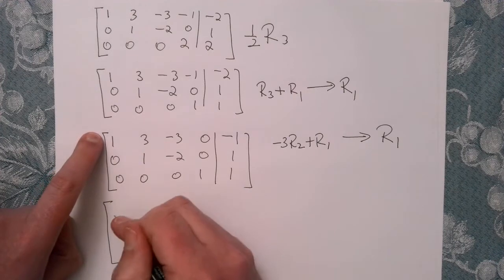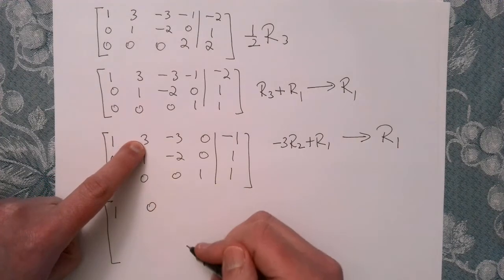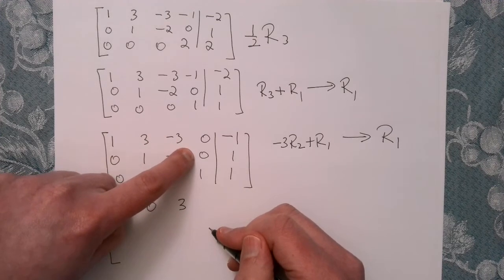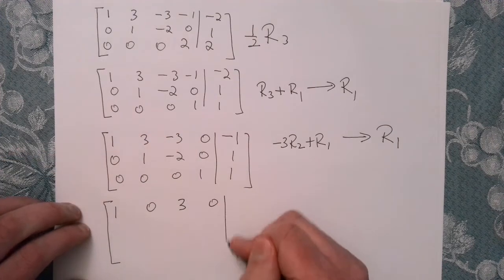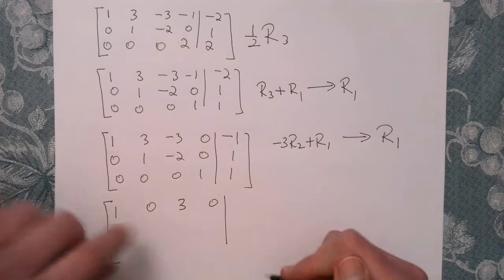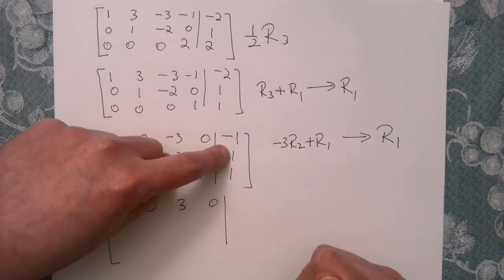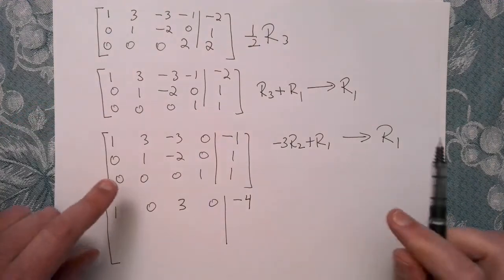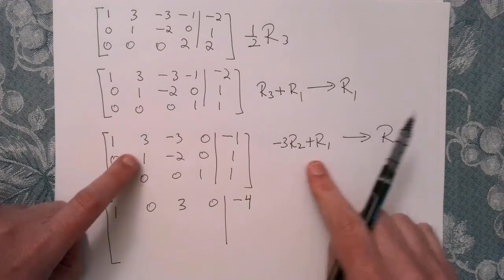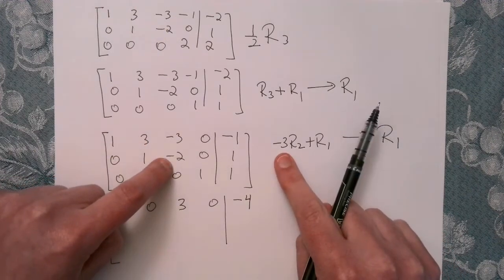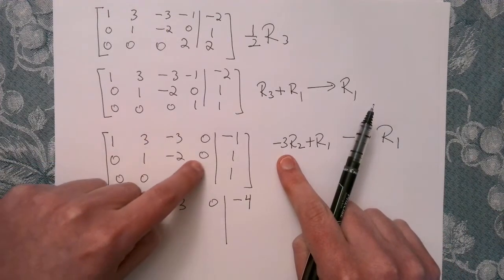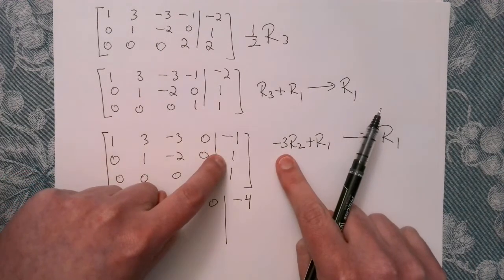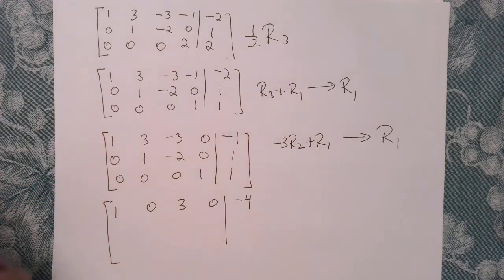That gives: 0 plus 1, minus 3 plus 3 equals 0, 6 minus 3, 0 plus 0, and minus 3 plus minus 1. Double-checking: 0 plus 1 is fine, negative 3 plus 3 is 0, 6 minus 3 is good, 0 plus 0, and minus 3 plus minus 1. That all seems good.